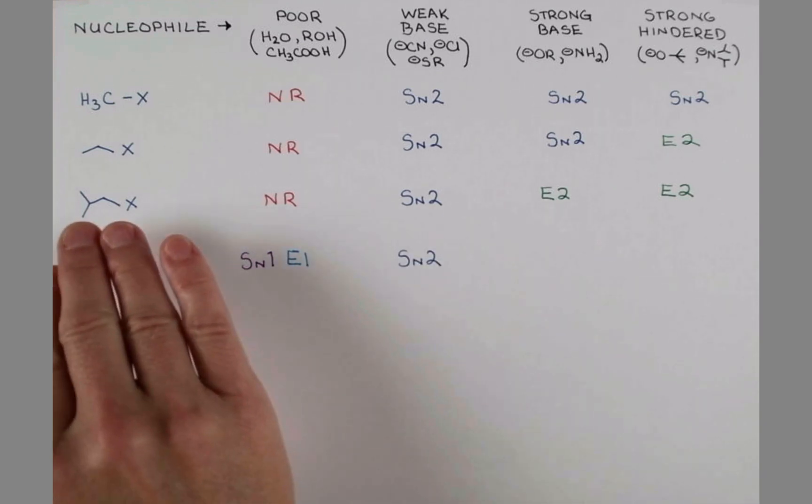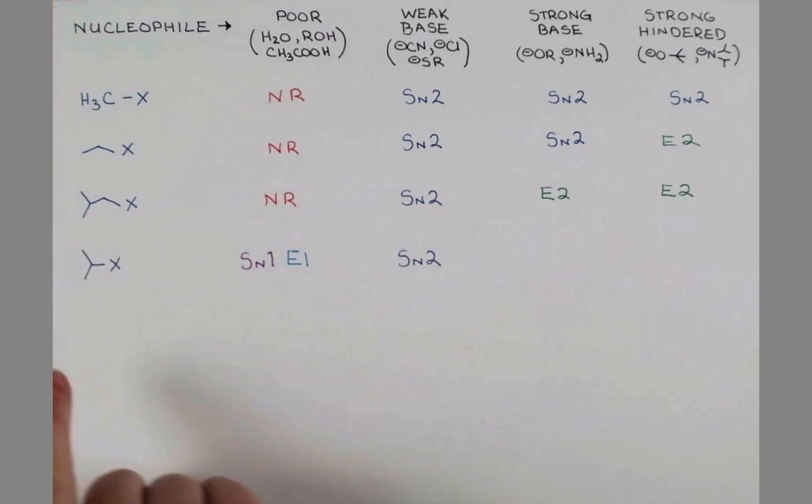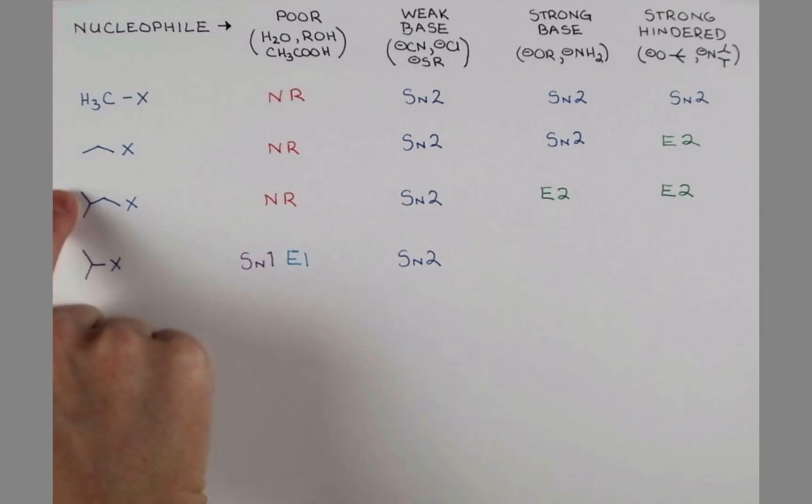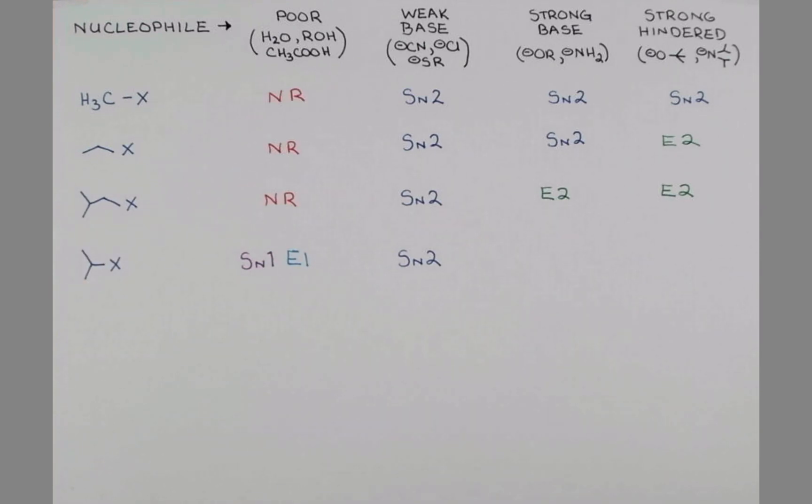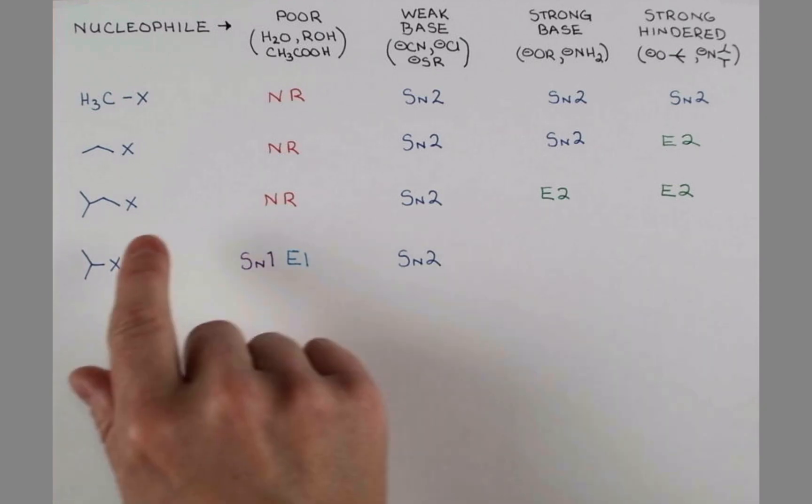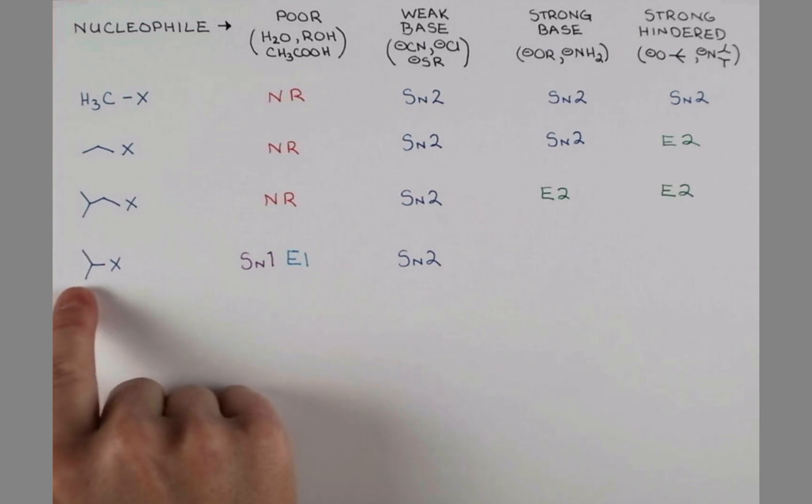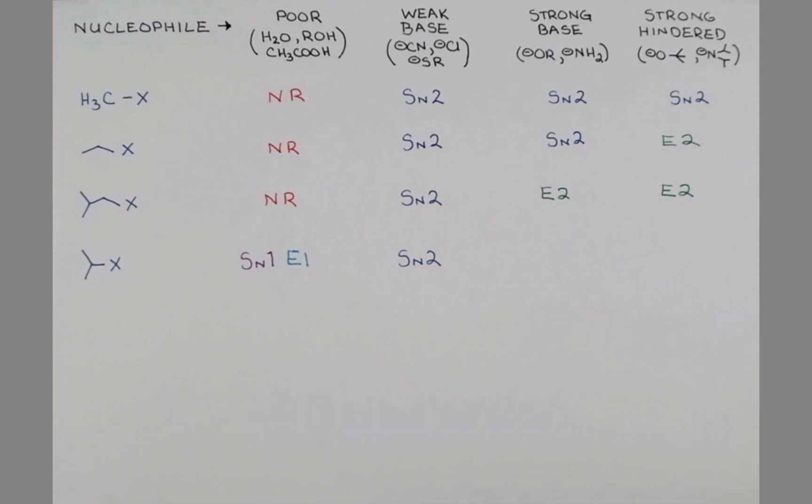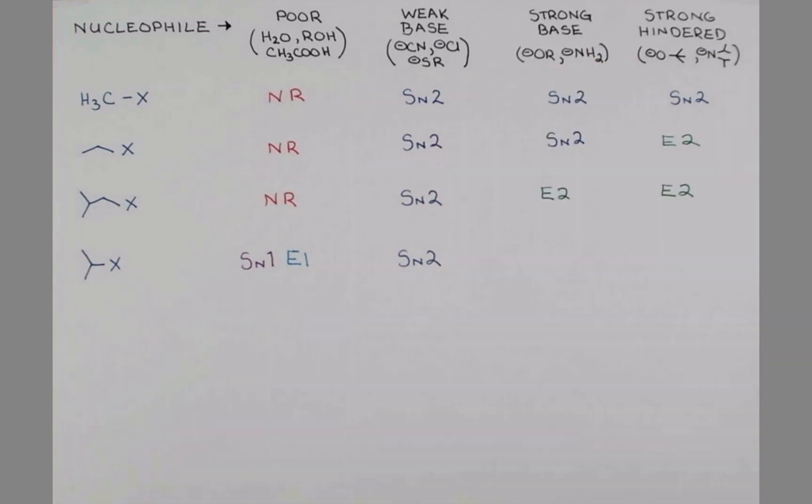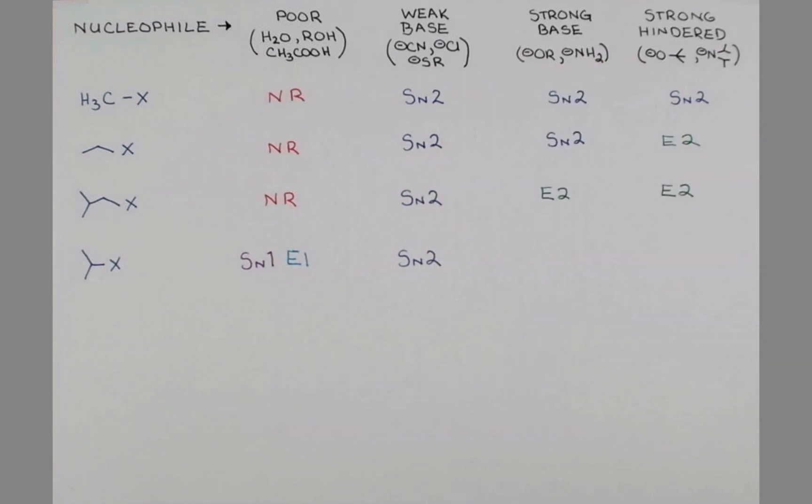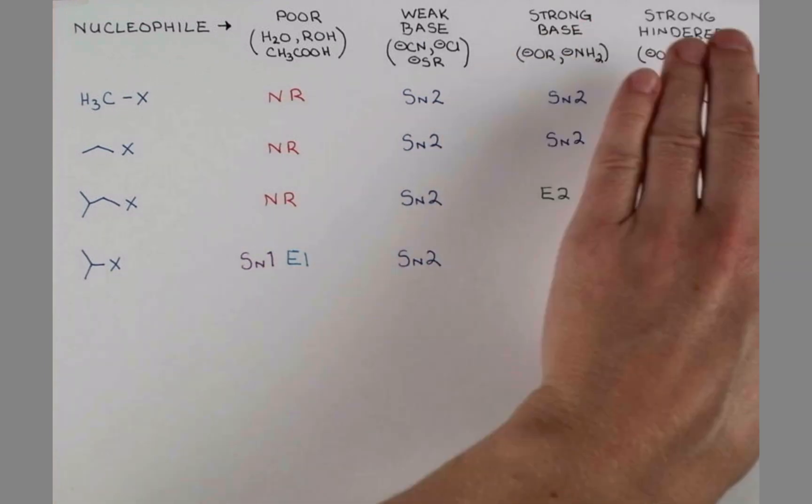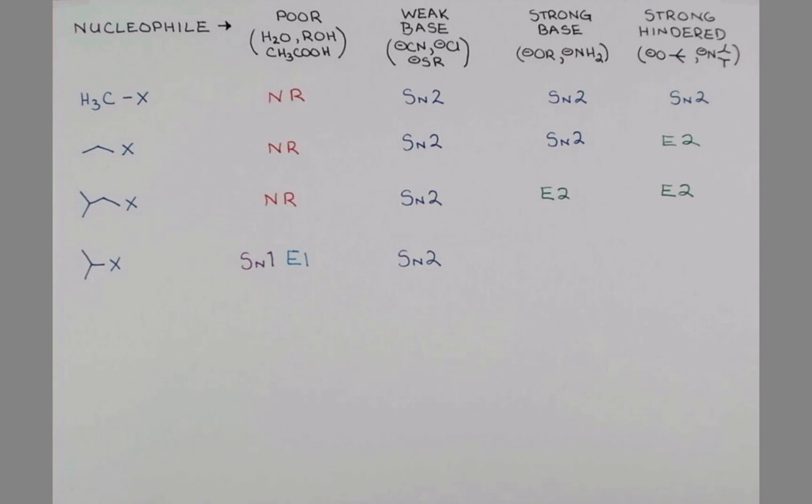If we compare our secondary substrate to our primary hindered substrate, we see we have a similar type of branching over here. That branching is going to sterically hinder substitution at the leaving group, but the adjacent protons are quite available. And so, strong bases are going to promote elimination. These are really good nucleophiles, and they're going to push our leaving group out by an E2 mechanism in both our strong base and strong hindered base situations.